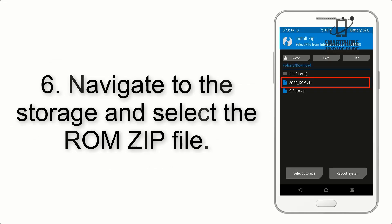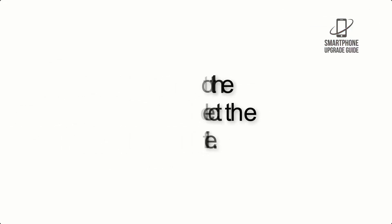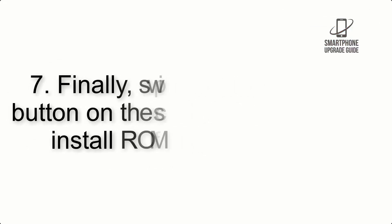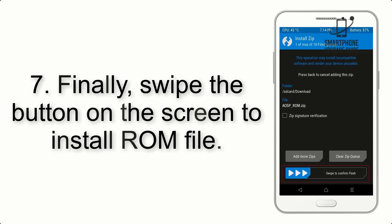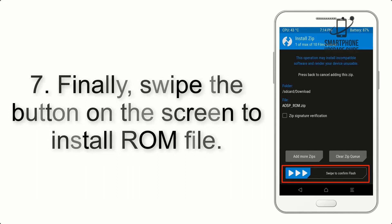Step 6: Navigate to the Storage and select the ROM ZIP file. Step 7: Finally, swipe the button on the screen to install the ROM file.